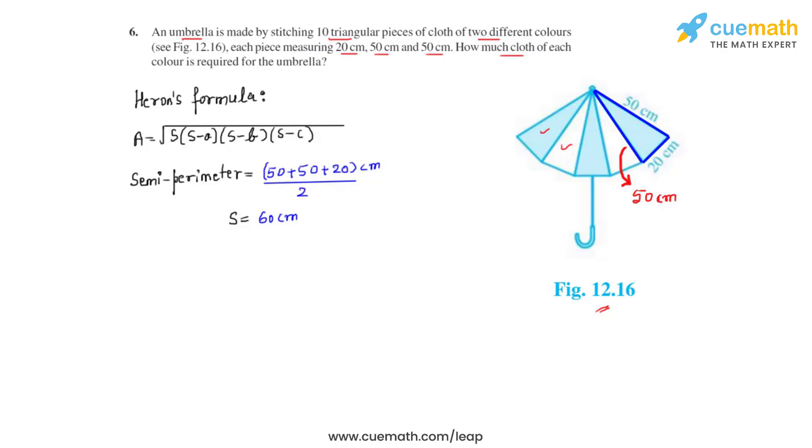Now that we have found the value of the semi-perimeter, let's find the area of one such triangular piece of cloth. That will be equal to under root 60 times 60 minus 50 times 60 minus 50 times 60 minus 20 centimeter square. On further calculation, this comes as under root 60 times 10 times 10 times 40 centimeter square.